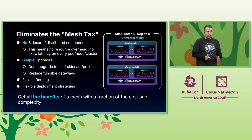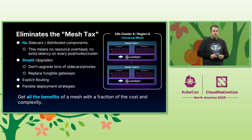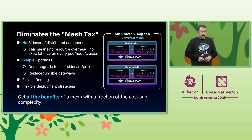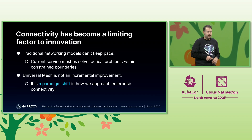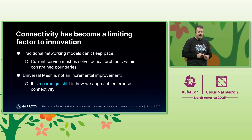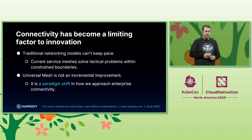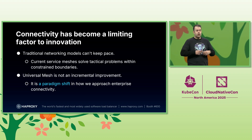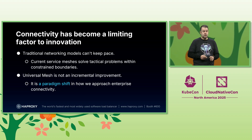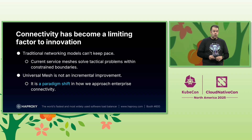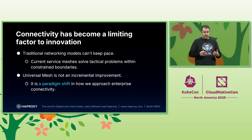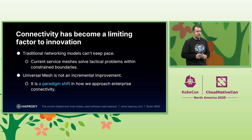We chose to go with explicit routing, enabling transparency for when issues inevitably arise. You get all the benefits of a mesh at a fraction of the cost and complexity. Unbelievably, connectivity has become a limiting factor to innovation. Traditional network models can't keep pace. Current service meshes solve tactical problems within constrained boundaries. We believe the universal mesh is not an incremental improvement — it's a paradigm shift in how we approach enterprise connectivity.